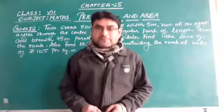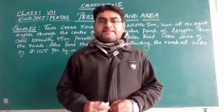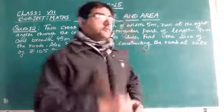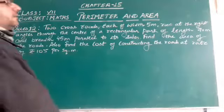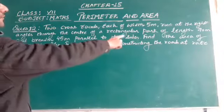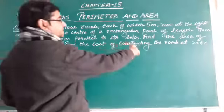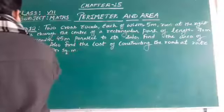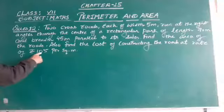Hello everybody, a very good morning to all of you my dear students. Today we will solve question number 12 of exercise 15.1. The question is: Two crossroads, each of width 5 meters, run at right angles to the center of a rectangular park of length 70 meters and breadth 45 meters, parallel to its sides. Find the area of the roads. Also find the cost of constructing the roads at the rate of rupees 105 per square meter.